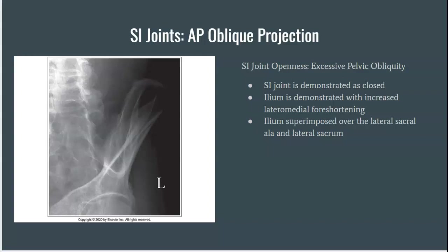You can see we don't even see the joint here. We typically tend to over-rotate rather than under-rotate, and this image demonstrates excessive rotation.